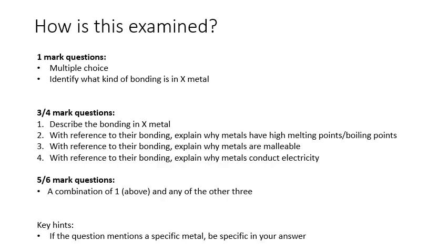So there's a range of ways this can be examined, from very simple one mark questions where you might get multiple choice, where you might be asked to identify what kind of bonding there is in a given metal. For example, they might say, what kind of bonding is there in sodium, in which case you would say metallic. We then move on to the three or four mark questions where you could be asked to describe the bonding in a given metal, whereby you would say, you have layers of positive metal ions surrounded by a sea of delocalized electrons, with strong electrostatic attractions between them. You might be asked to explain certain properties, why they have high melting and boiling points, why they're malleable, and why they conduct electricity. Or you might get a five or six marks question, where you might be asked to combine some of those aspects. For example, describe the bonding in sodium and explain why it's malleable and conducts electricity. Now be clear here, if the question mentions a specific metal, you must be specific in your answer. Therefore, if it says, describe the bonding in sodium, you need to say that each atom donates one electron to the sea of delocalized electrons forming sodium one plus ions.